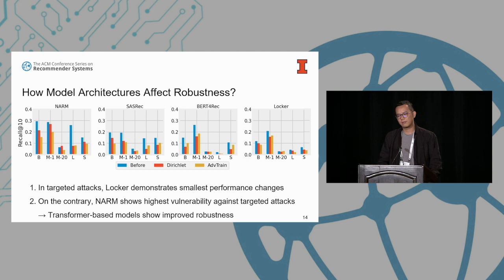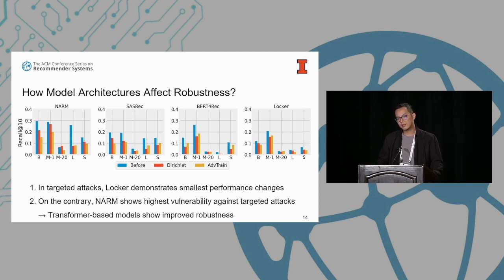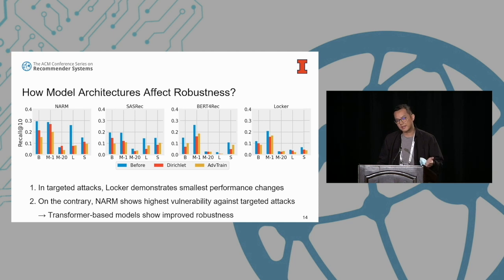Finally, looking at how model architectures affect robustness: these four charts show performance variations for each model. In targeted attacks, Locker demonstrates the smallest performance changes. Conversely, ARM shows the highest vulnerability against both targeted and untargeted attacks. This suggests that transformer-based models can have improved robustness.